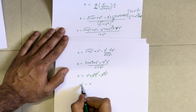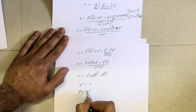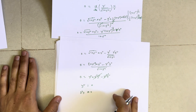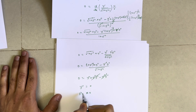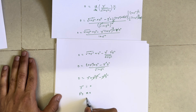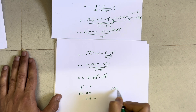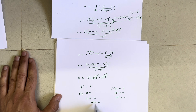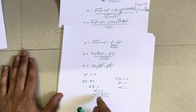We can write y'' as D²y = 0. Forming the auxiliary equation by substituting D with m: m² = 0. Taking the square root gives two equal roots: m = 0, 0. These are real and equal roots.